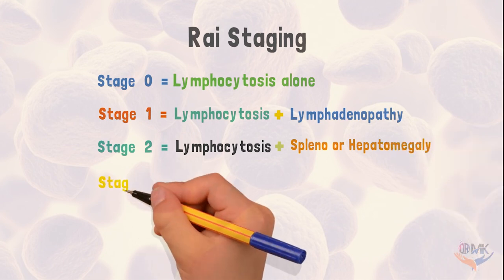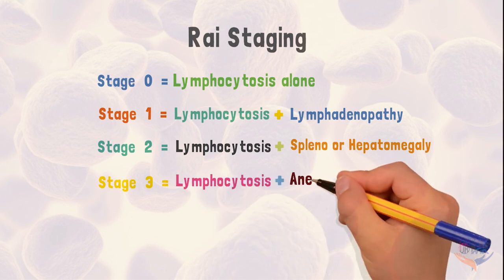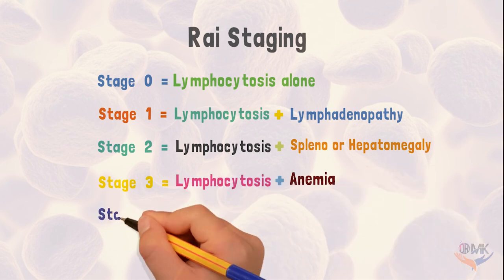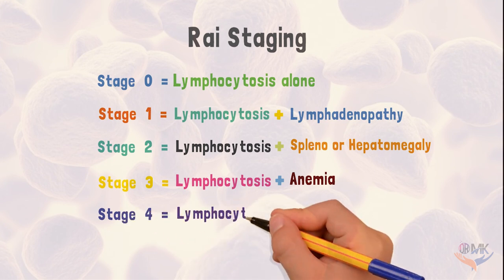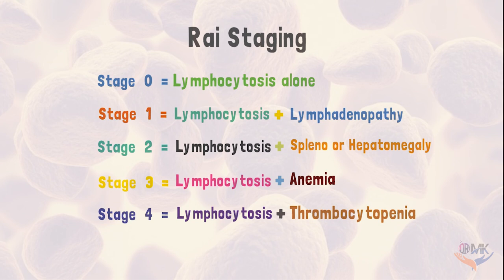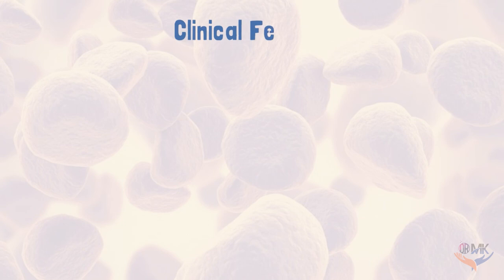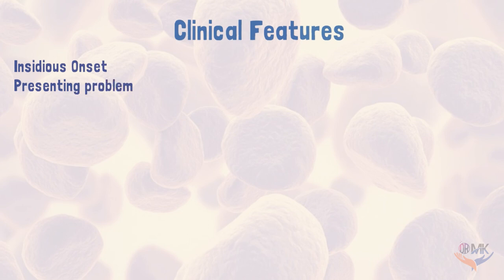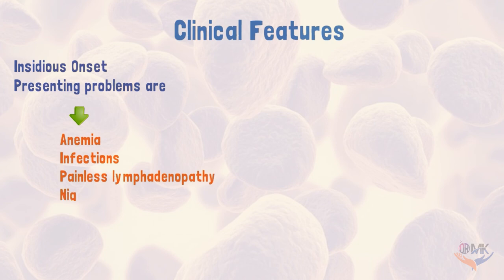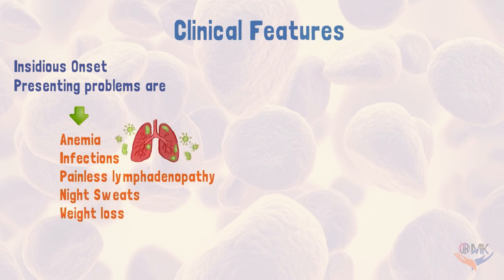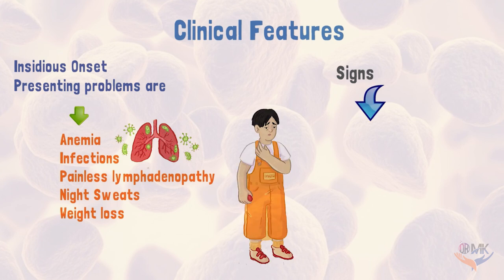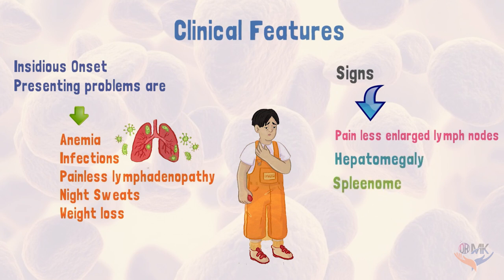In stage 3, the patient presents with lymphocytosis and anemia. In stage 4, the patient has lymphocytosis and thrombocytopenia. Clinical features associated with this disease include an insidious onset. Presenting problems are anemia, infections, painless lymphadenopathy, night sweats, and weight loss. Signs of chronic lymphocytic leukemia are painless enlarged lymph nodes, hepatomegaly, and splenomegaly.